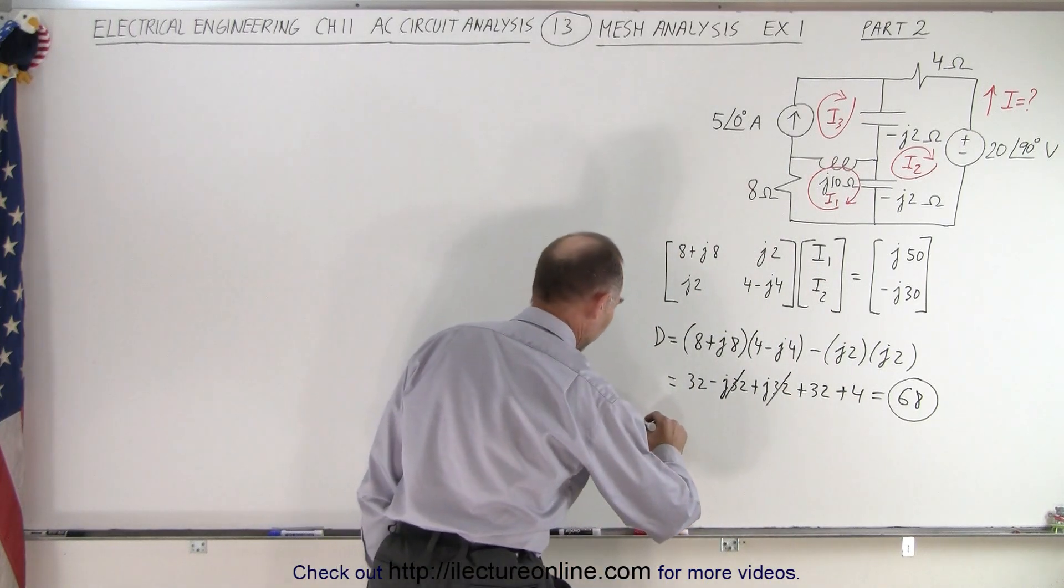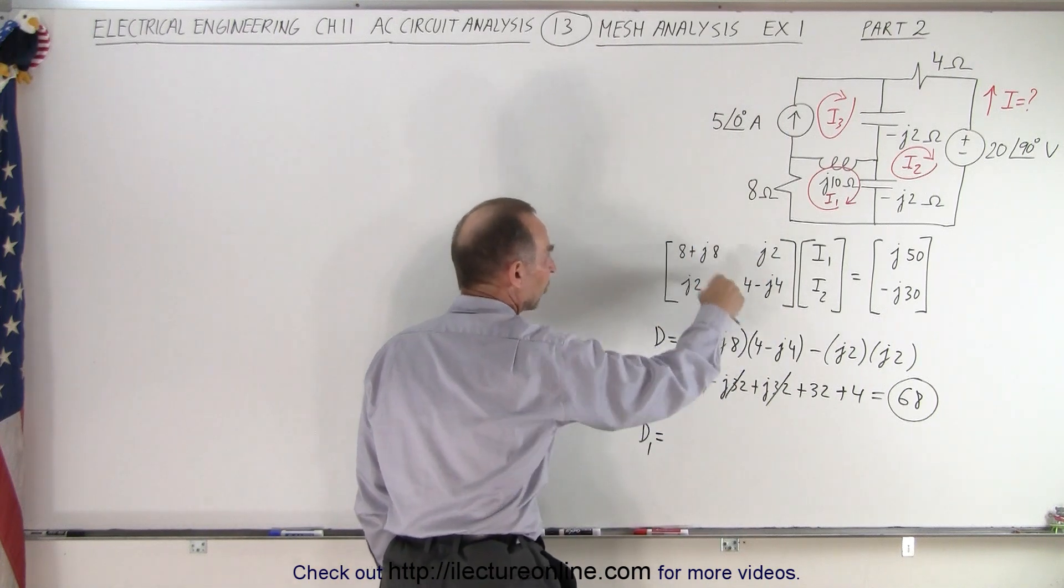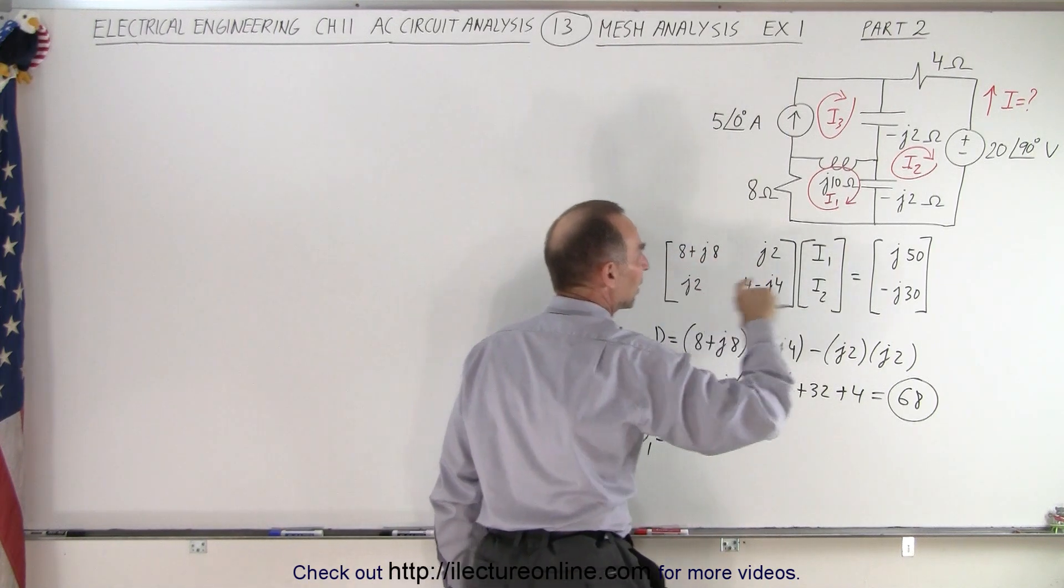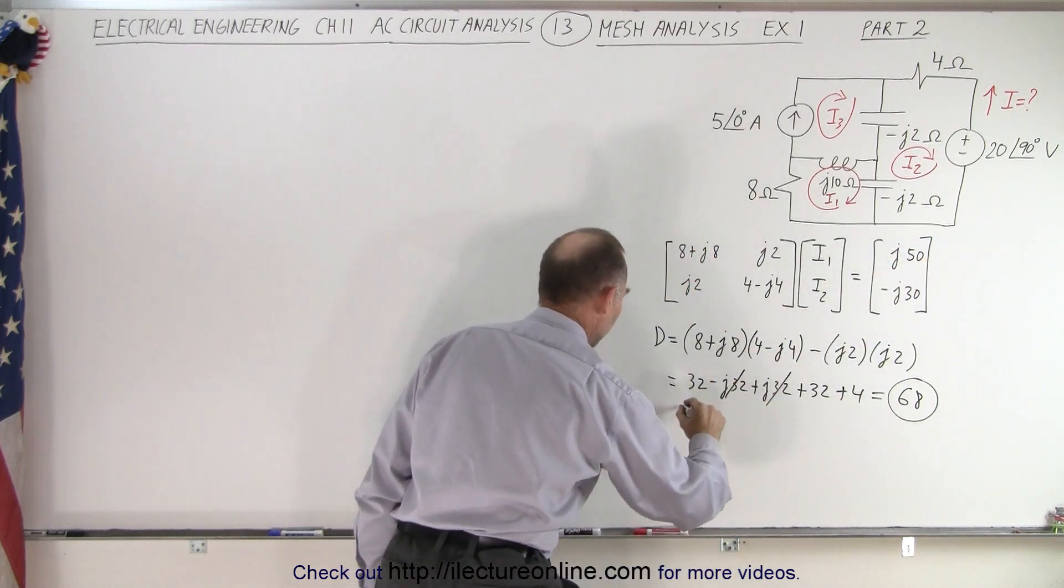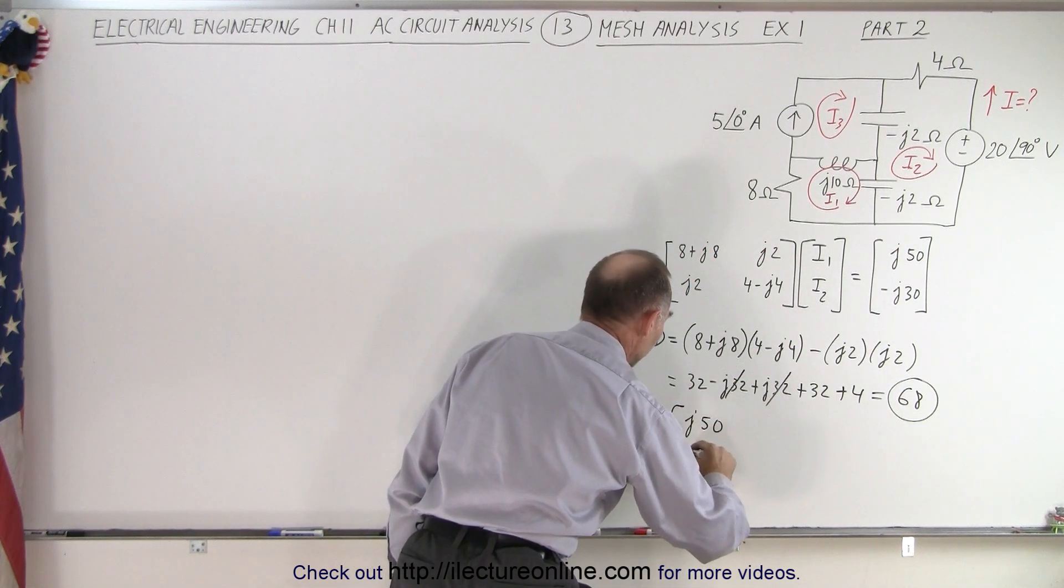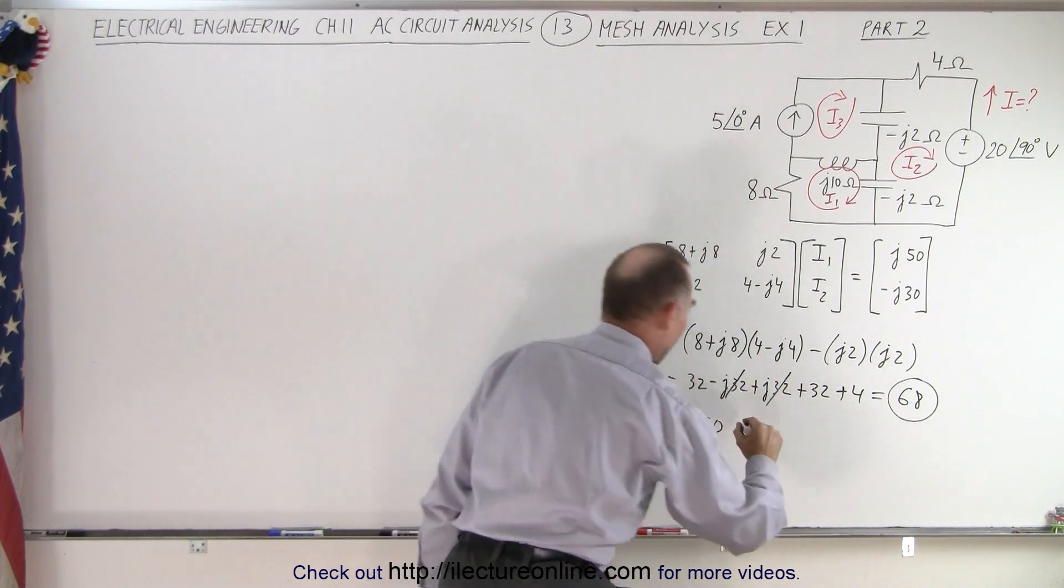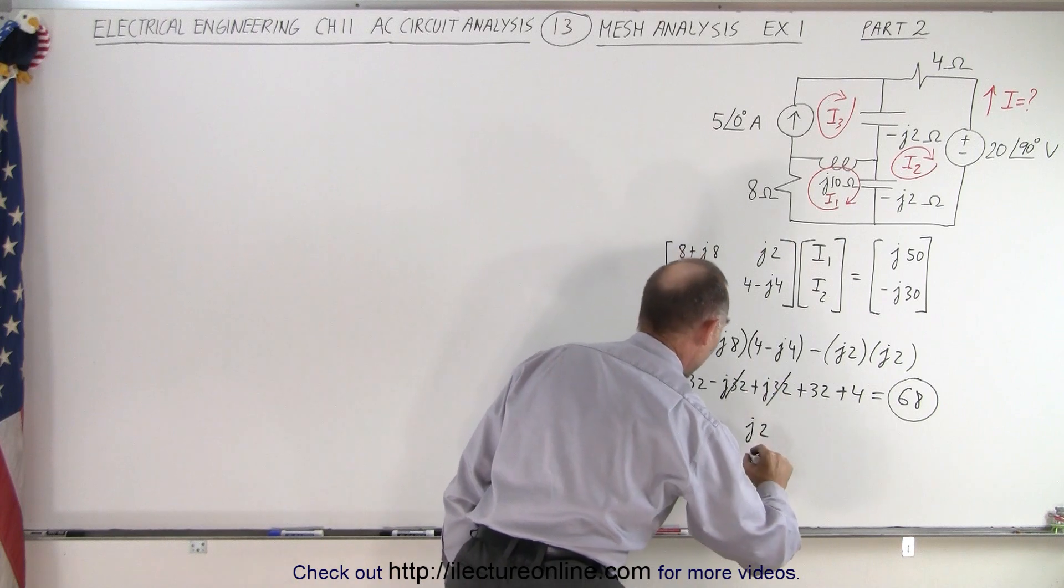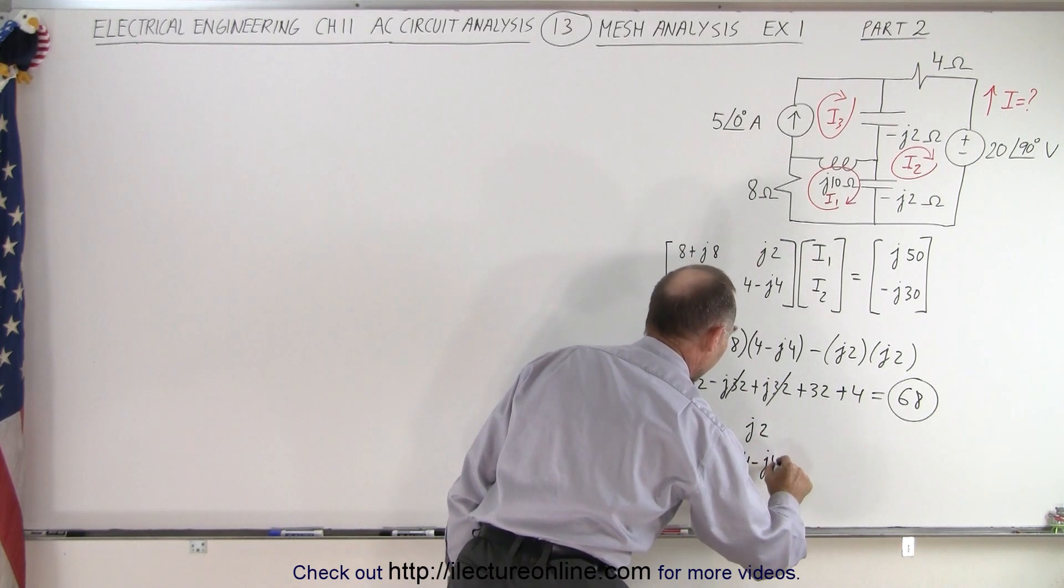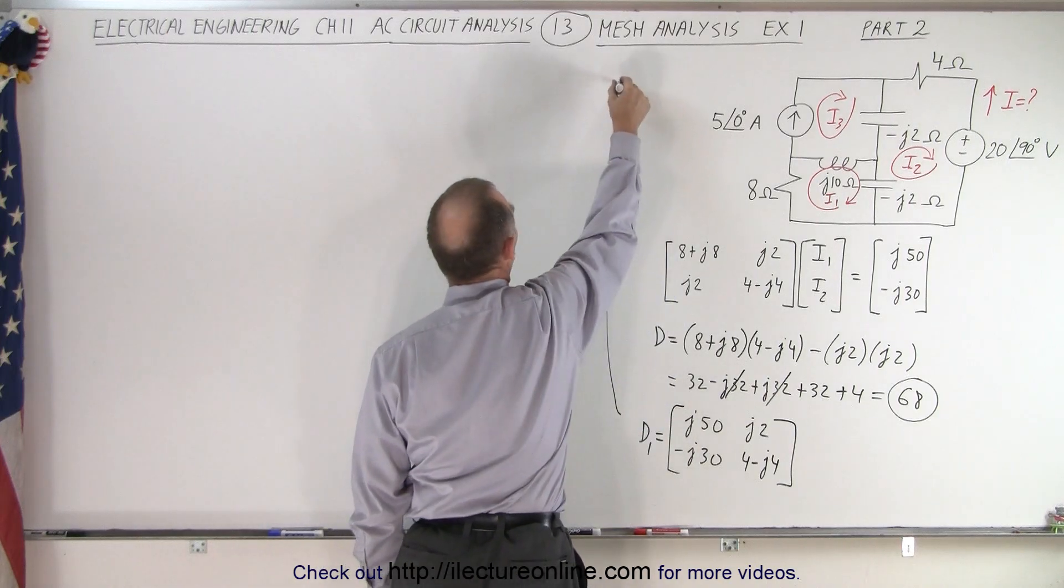So next we need to solve for d1. d1 is going to be equal to the determinant, but with the first column replaced by these two values. So we end up with j50 and a minus j30 here instead of these two terms. And then here we have j2 and we have 4 minus j4. And let's go ahead and continue solving that one up here.